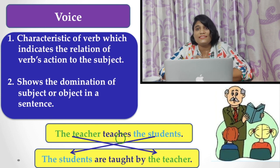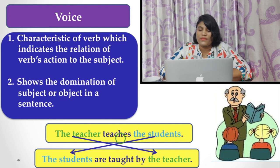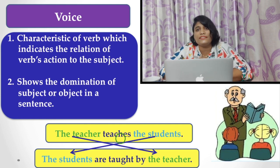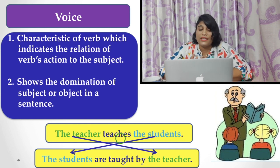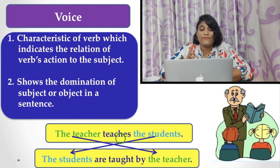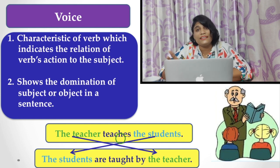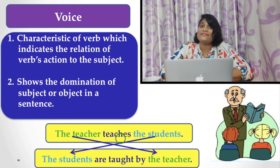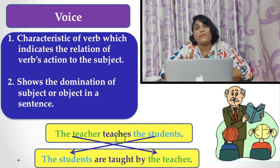There is also a significant point in the verb. You may notice that in the first sentence, the sentence was written in simple present tense and the verb is 'teaches.' But in the second one, the verb becomes 'are taught by the teacher.' 'Are' is the form of be-verb, and 'taught' is the participle form of the verb 'teach.'